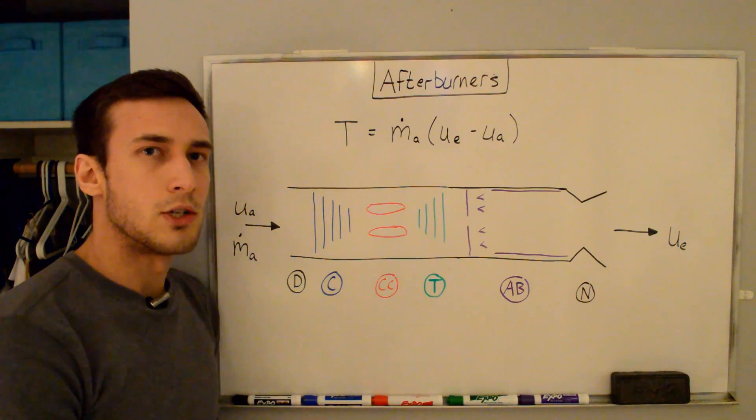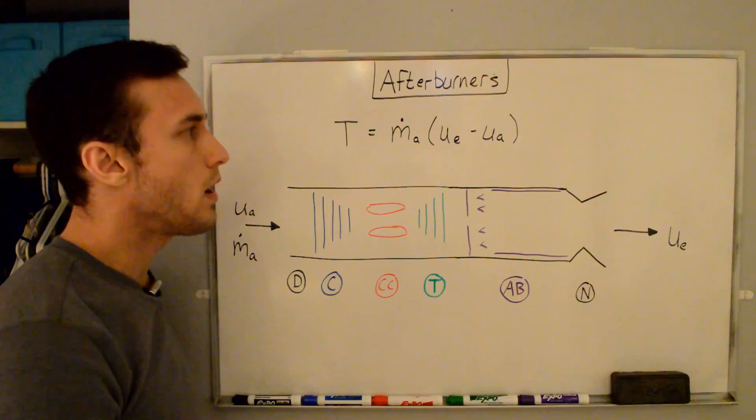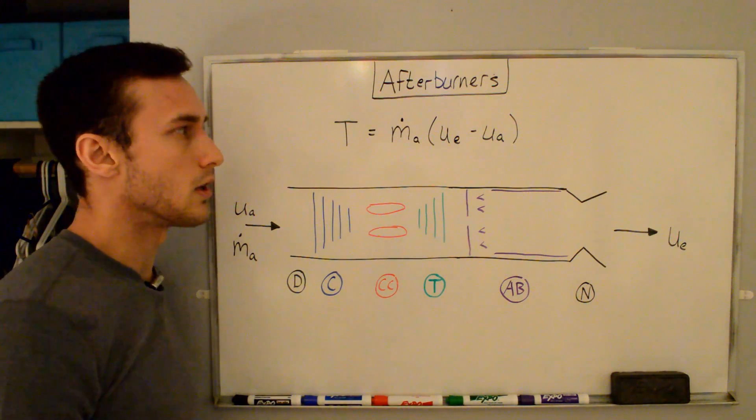So how can we increase the thrust of an engine? Let's take a look at the simplified jet engine thrust equation here, and we can see that one way we can increase the thrust is to increase the exit velocity of the gases coming out the exhaust of the engine.